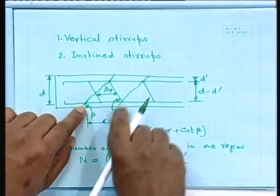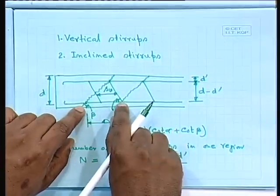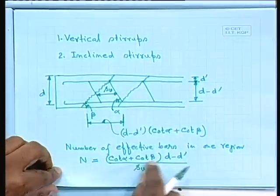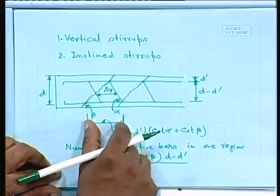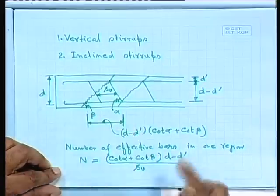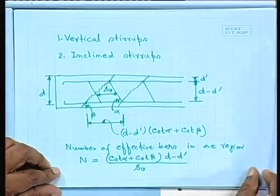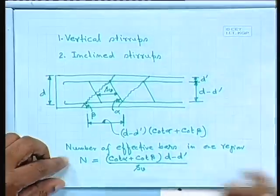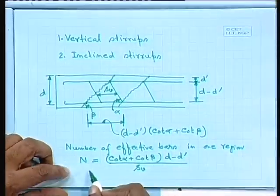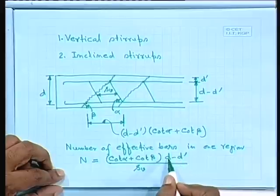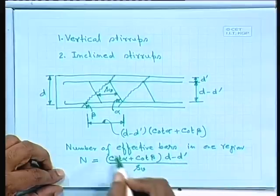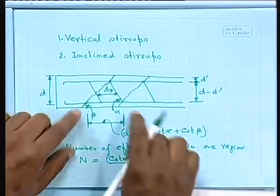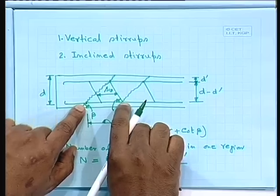So, the number n — that means we have to provide bars within this region. We get cot alpha plus cot beta because we are getting this horizontal length. Instead of having d/s_v, we get this formula because we have to provide within this region.